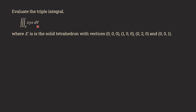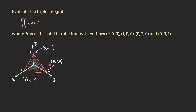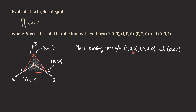Today let's talk about evaluating a triple integral of XYZ over a solid that is the tetrahedron with those given vertices. First thing we're going to do is the sketch, and you can see the tetrahedron is this solid here with a vertex at the origin. The three non-origin points are (1,0,0), (0,2,0), and (0,0,1).